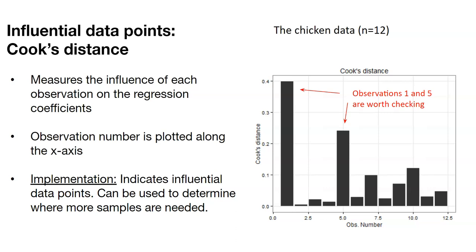And so let's take a look at the data from the chicken and lysine dataset. What we can see here is if we ranked and we looked at the rows for the 12 data points, the first observation and the fifth observation are observations worth checking.